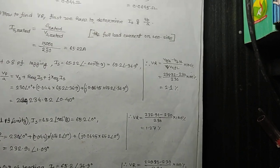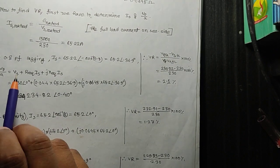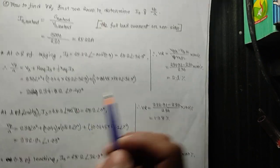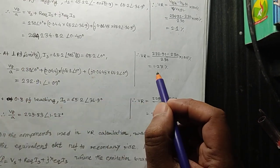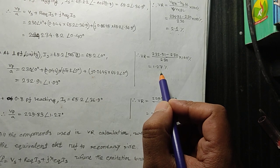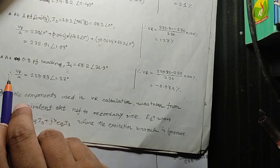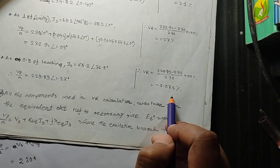...for a lagging power factor, the voltage regulation is positive. For a unity power factor, the voltage regulation is also positive. And for a leading power factor of a transformer, the voltage regulation is negative.